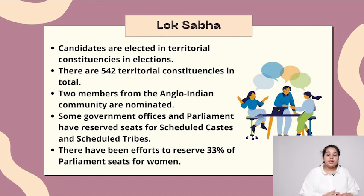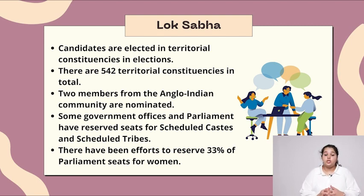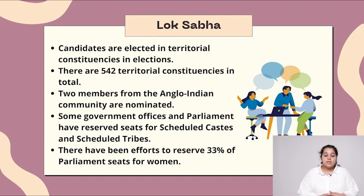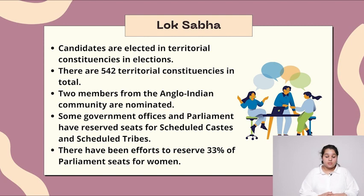Lok Sabha. Candidates are elected in territorial constituencies in the elections. There are 542 territorial constituencies in total. Two members from the Anglo-Indian community are nominated. Some government offices and parliament seats are reserved for scheduled castes and scheduled tribes. There have been efforts to reserve 33% of the parliament seats for women.